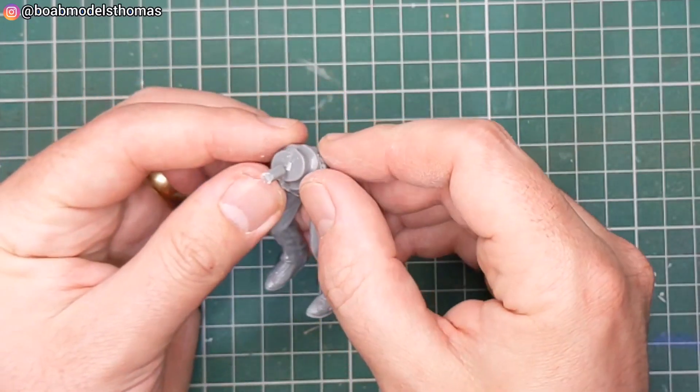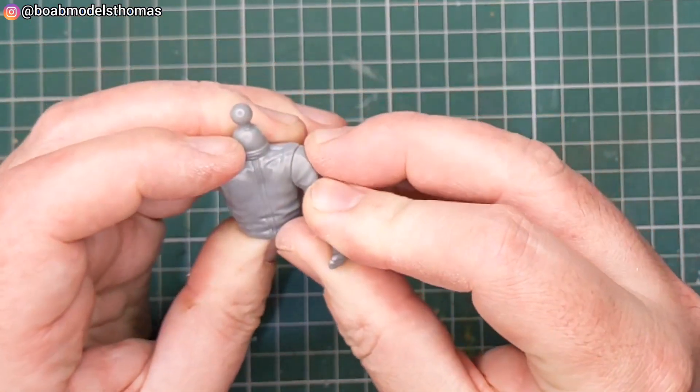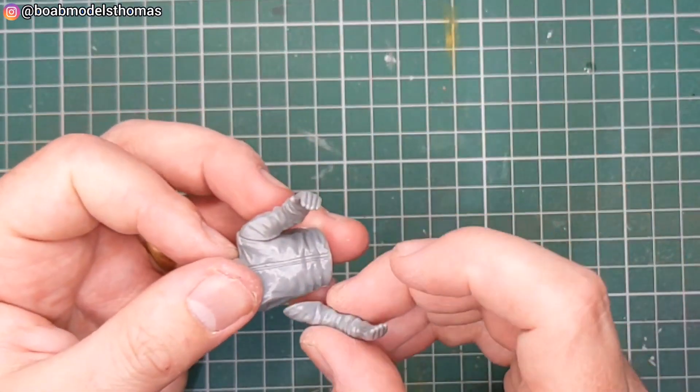I left that little bit of sprue on the top so that it gave something to hold when I was spraying it. This one is standing up and has his arms in such a position to hold onto a wheel.